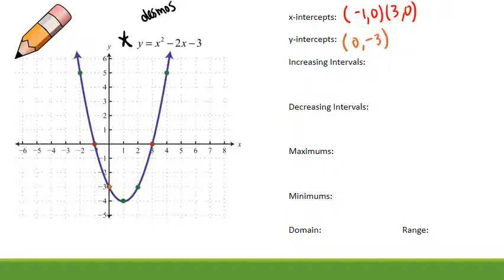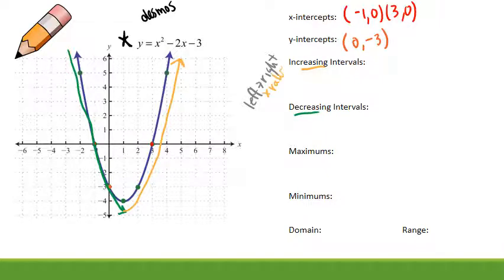Increasing intervals. Where am I increasing? Where am I decreasing? We want to read left to right. I'm going to keep stressing that left to right. So I'm going to use yellow for increasing and green for decreasing. Colors might help if you're a visual learner. As I read left to right, I start by going down. So I'm decreasing to that point. And then as I change direction, I'm increasing. So I'm increasing remember x values from 1 to infinity. It's going forever to the right or forever up.